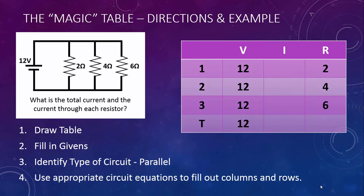Now we can use Ohm's law across each row to figure out the current. I times R must equal V: 6 times 2 equals 12, 3 times 4 equals 12, and 2 times 6 equals 12. We've found the current through each resistor, and if we simply add those up, we can find the total current in the circuit. If we also wanted the equivalent resistance, we could use R equals V divided by I — that's 12 divided by 11 — or use the parallel equivalent resistance equation with 2, 4, and 6 ohms. Either way, the equivalent resistance is 1.09 ohms.